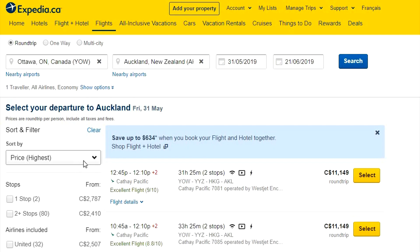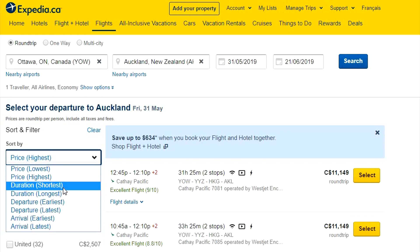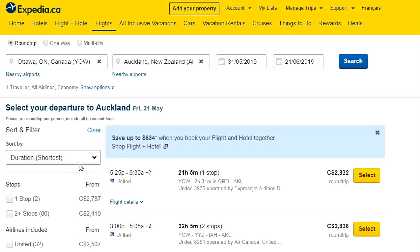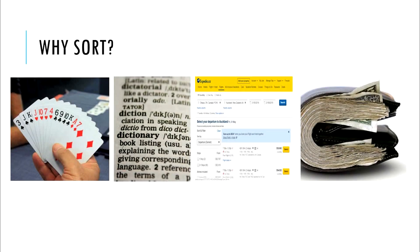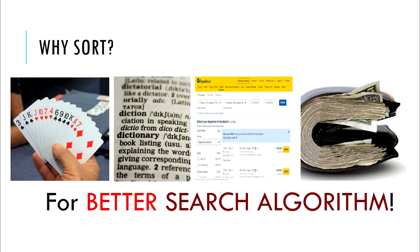These sites allow users to use their sorting techniques so that the users can find the results that they're looking for in a much faster way. Thus, the whole point of sorting is for a better and quicker search algorithm.